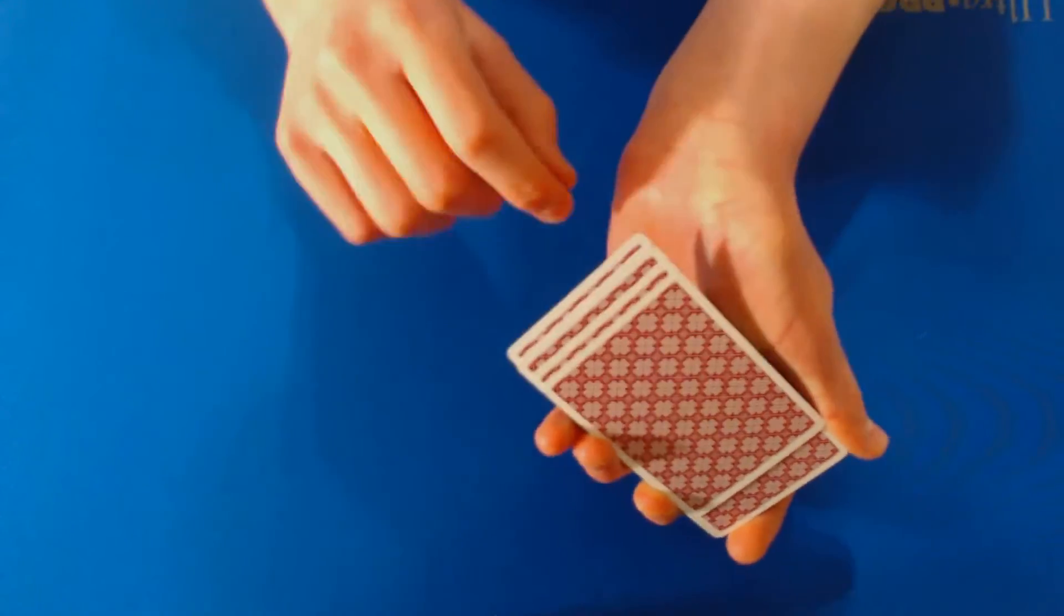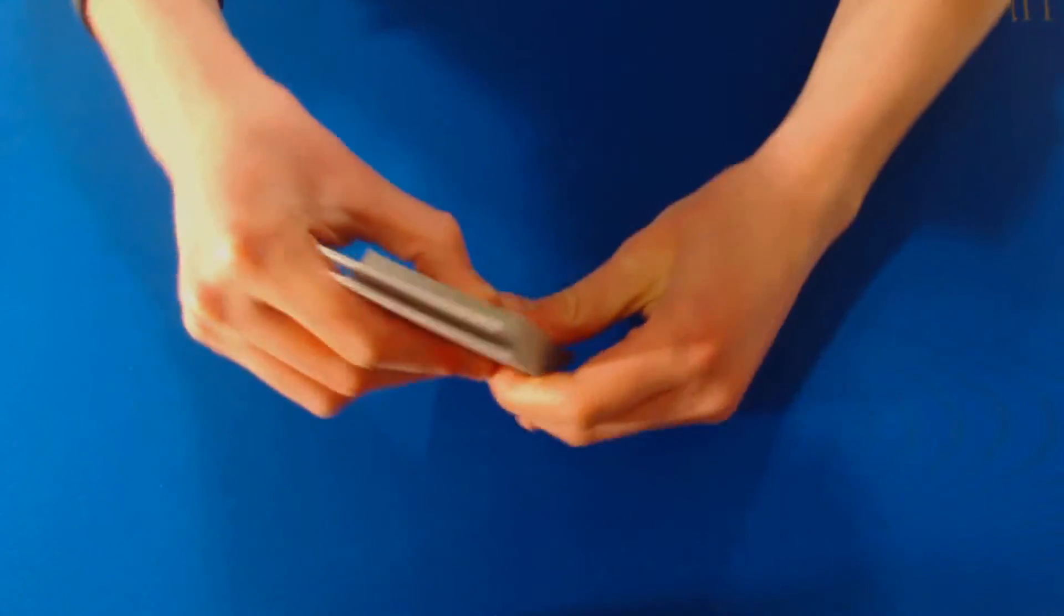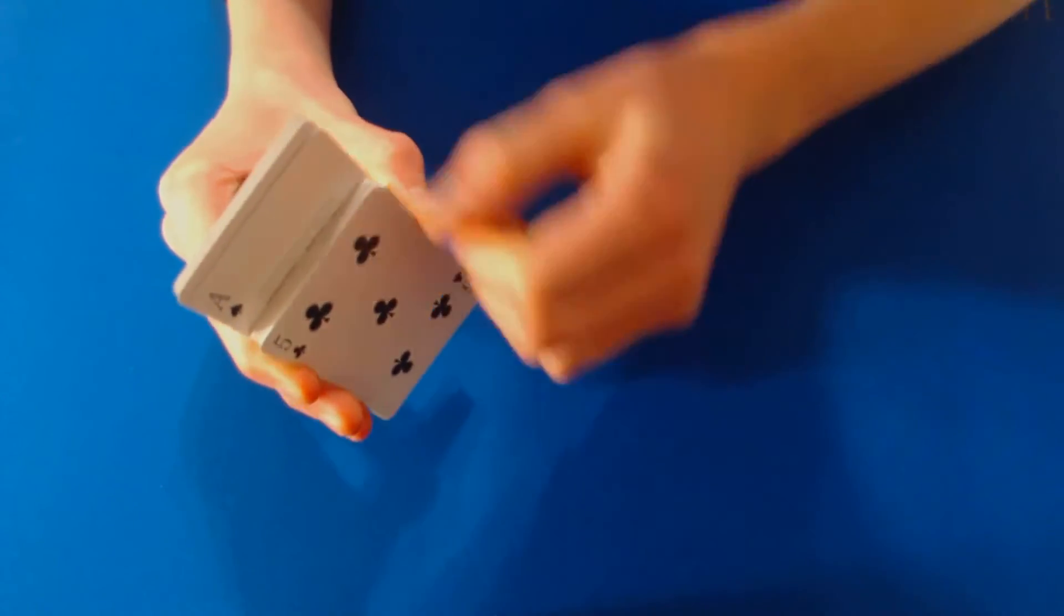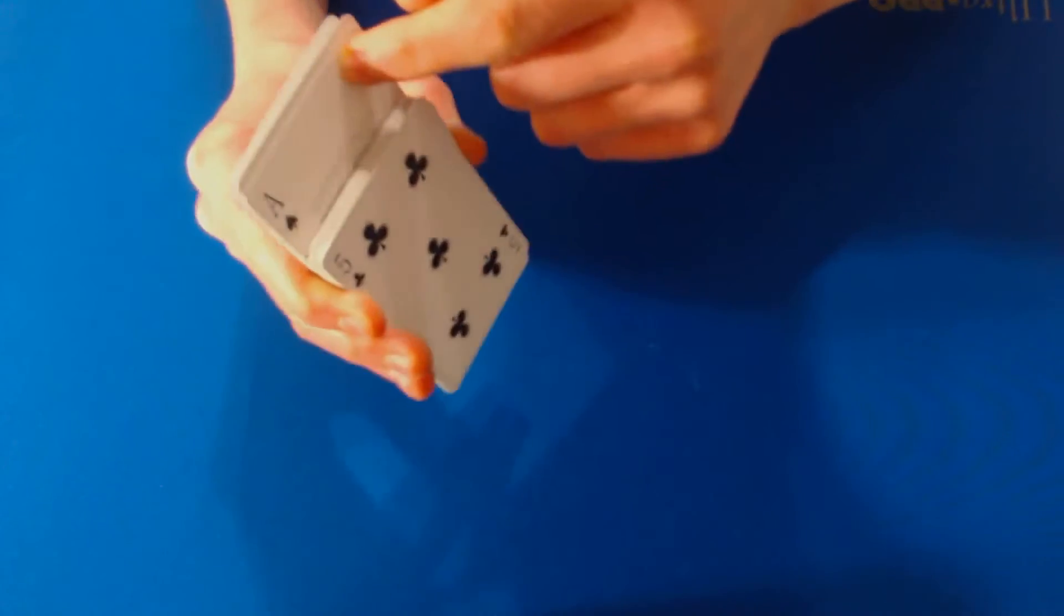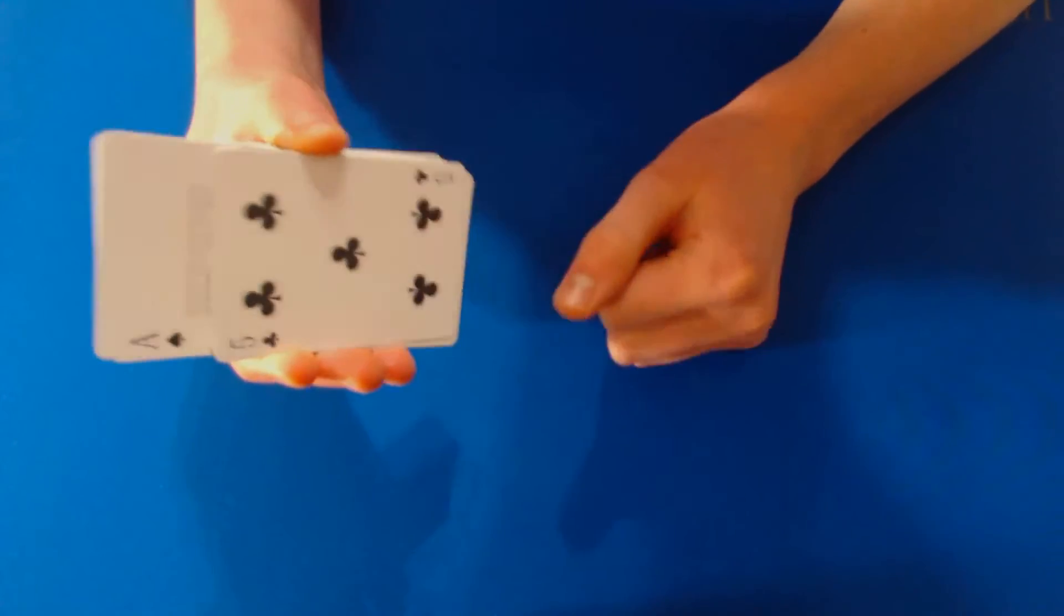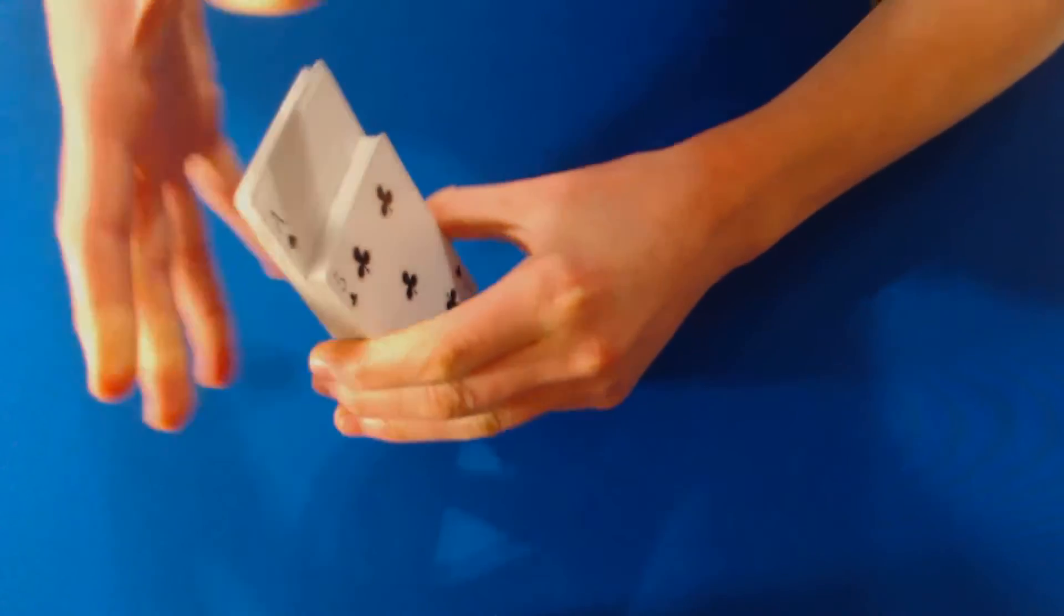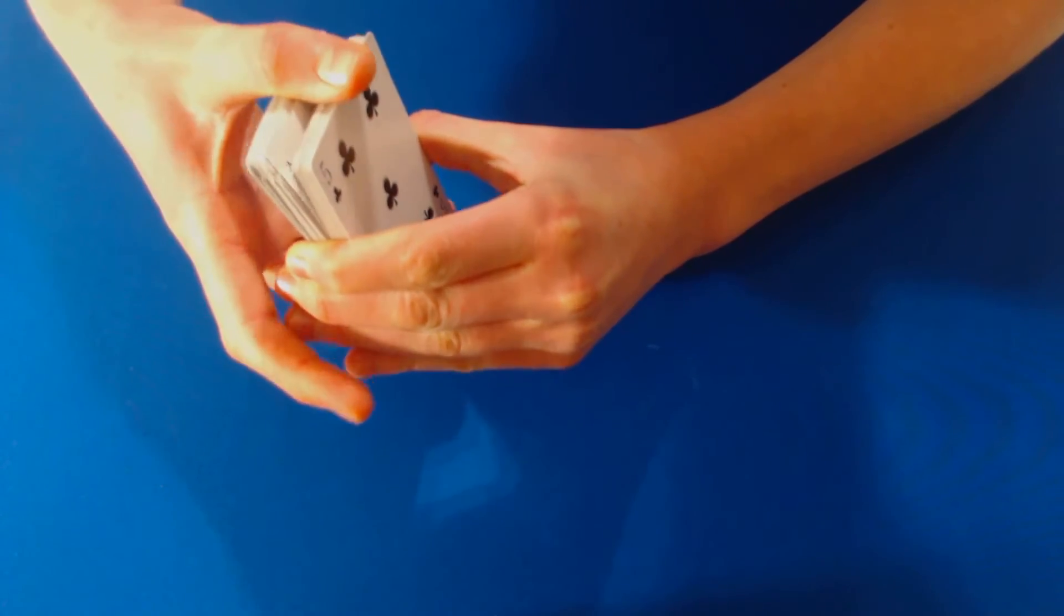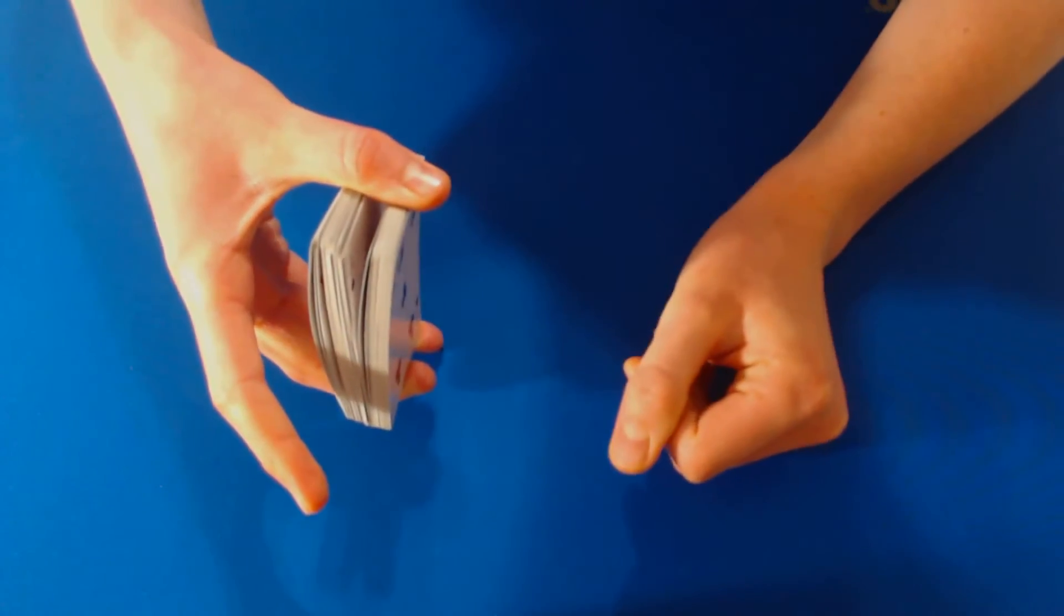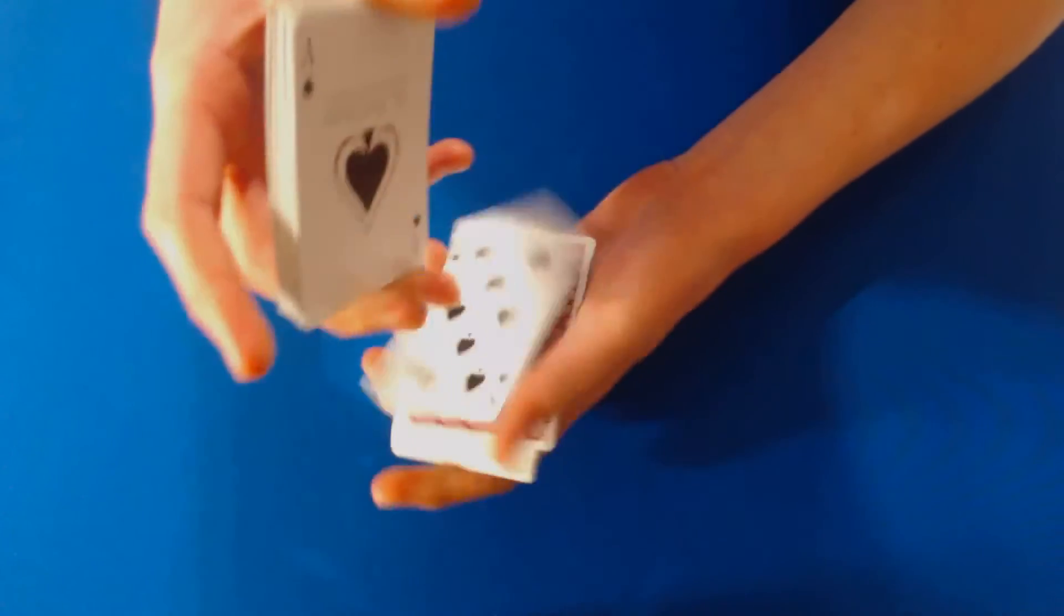But right under this card right here, in fact the ace of spades, is the selected card, right? Because I out-jogged my first dribble. So what you're going to do when you pick up the deck is you're going to push your thumb forward and out and catch that thumb break.